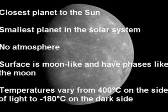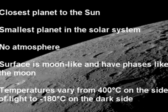Mercury is the smallest and closest planet to the sun and has no atmosphere due to the effects of the solar winds. Therefore, it is bombarded by asteroids and comets. Its surface is also similar to our moon and has phases like the moon. The temperatures vary from 400 degrees Celsius on the side of light to 280 degrees Celsius on the dark side due to its lack of an atmosphere. It has no moons.